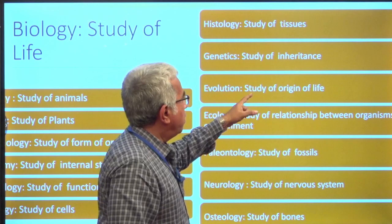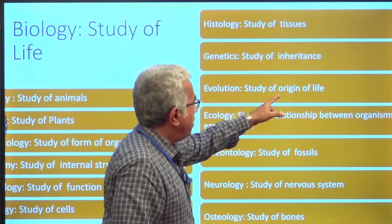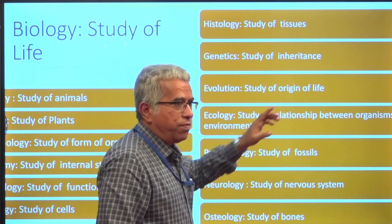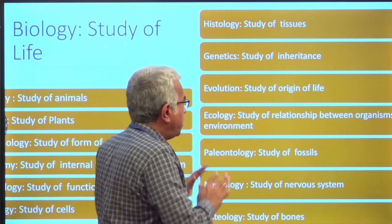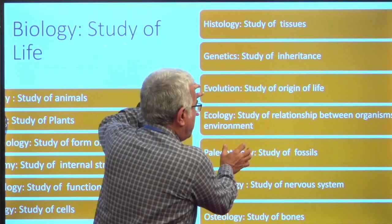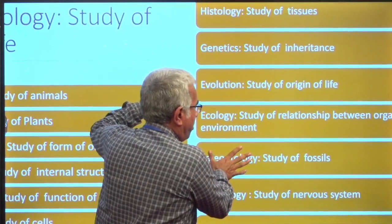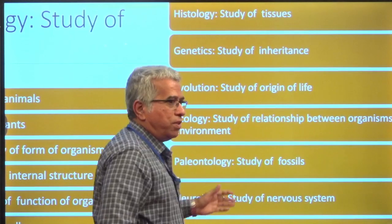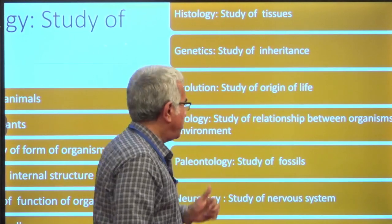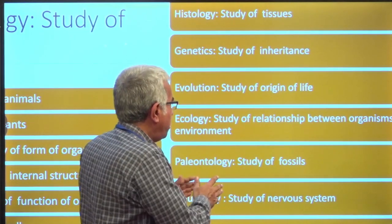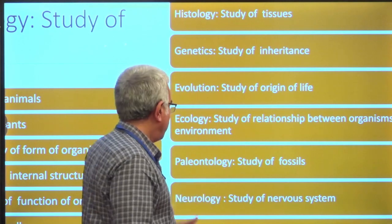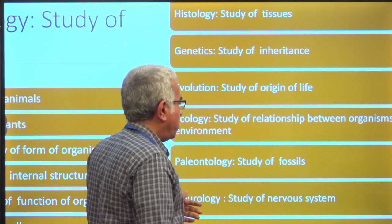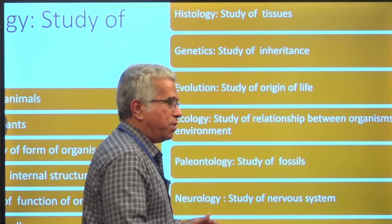Evolution deals with the study of the origin of life. Ecology deals with the relationship between organisms and the environment. Paleontology is the study of fossils. Neurology is the study of the nervous system.